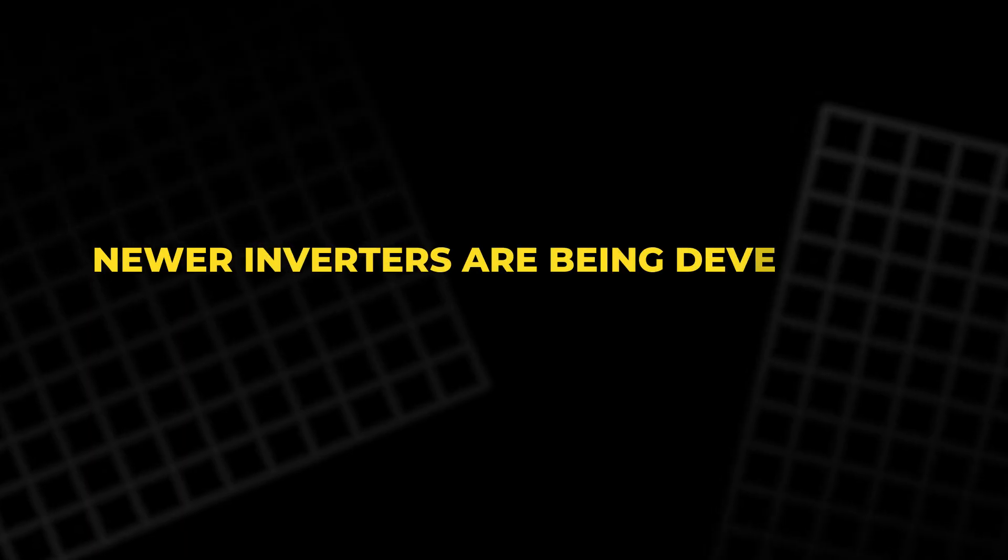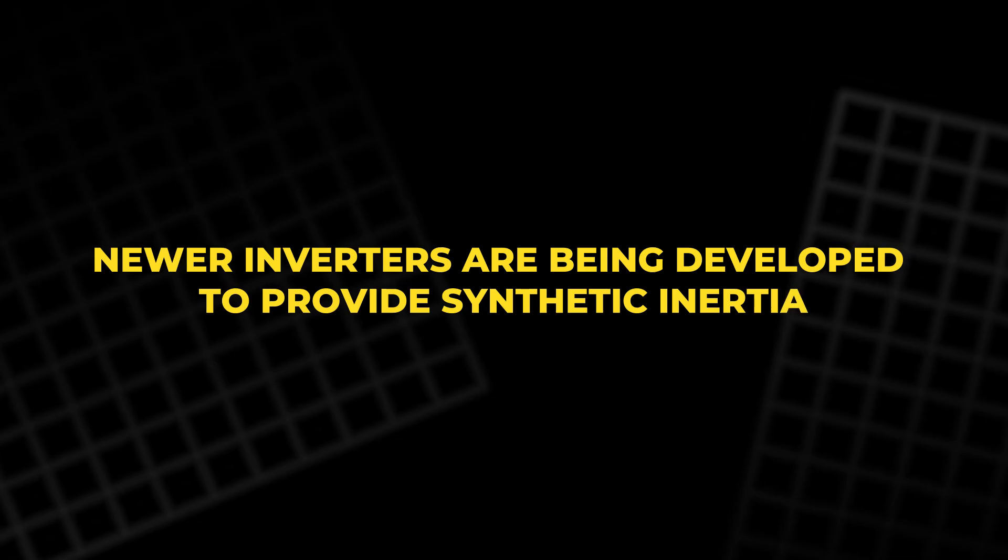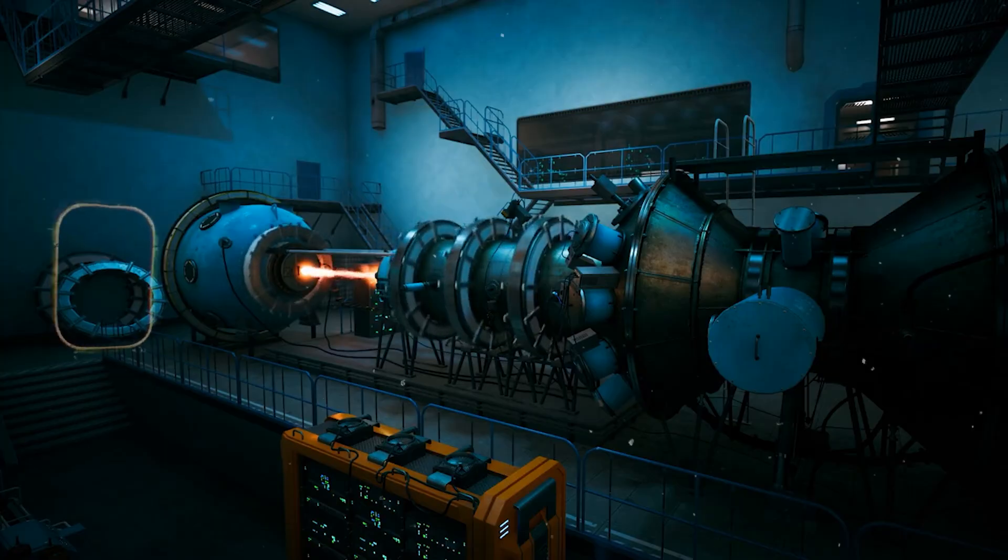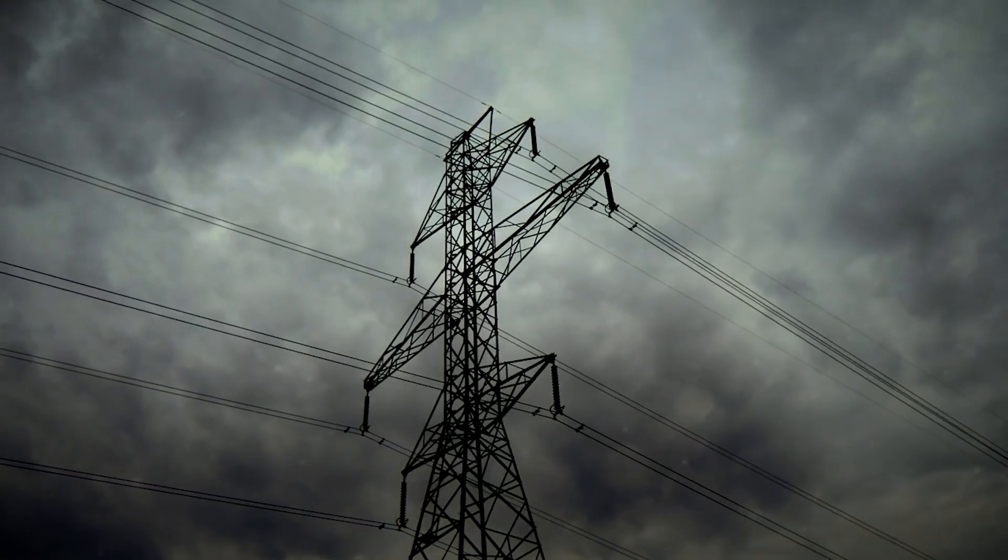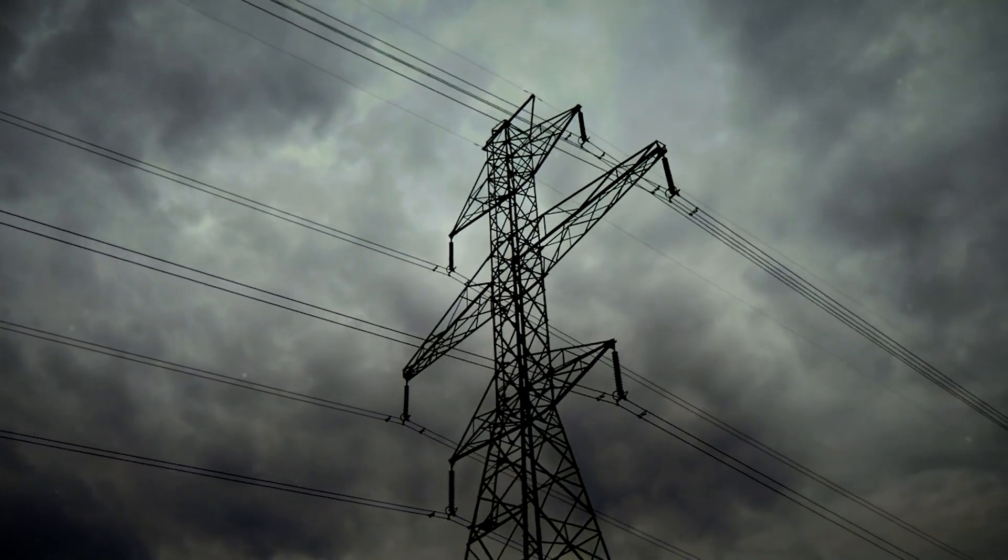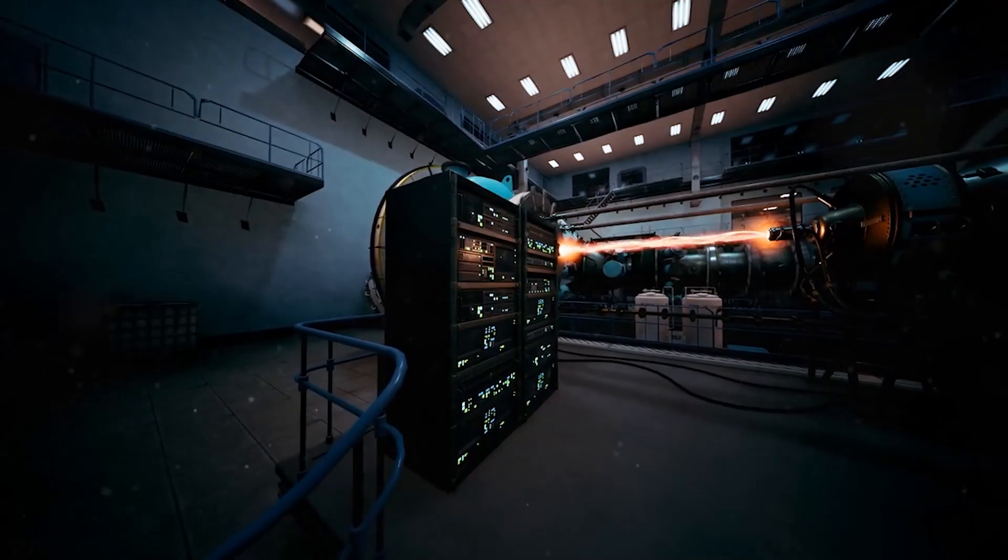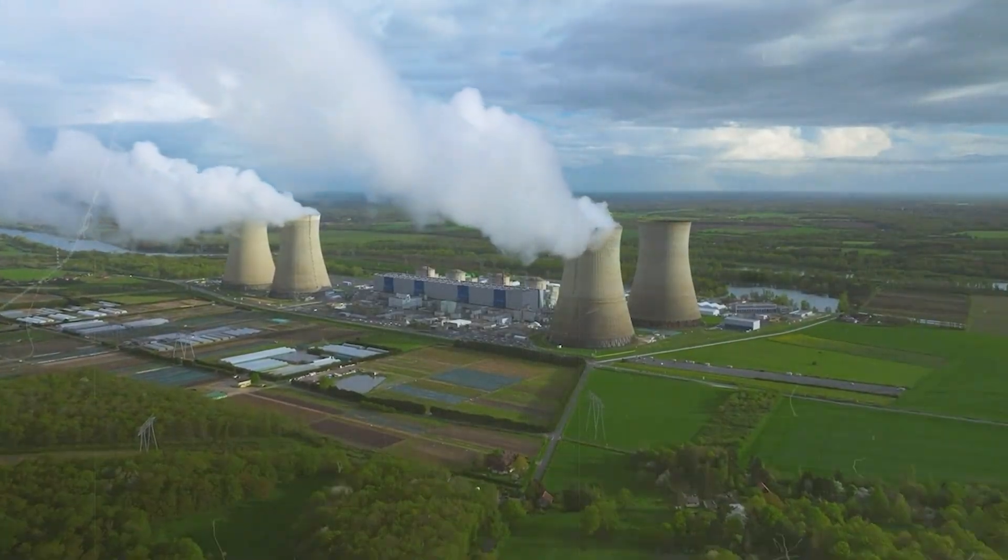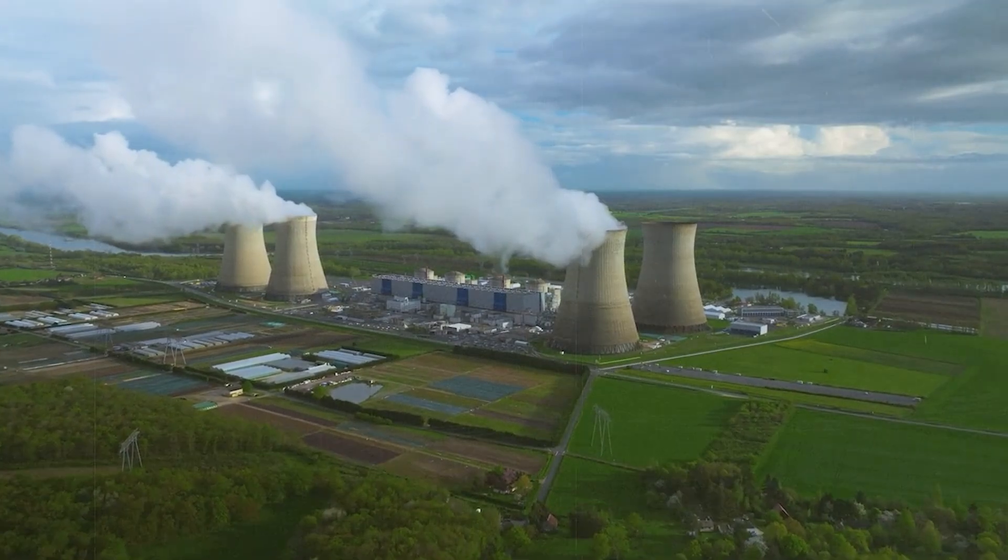To address this, newer inverters are being developed to provide synthetic inertia. This means that the inverter can simulate the behavior of a large spinning generator, helping to stabilize the grid during disturbances. While these inverters can help address some of the challenges of integrating renewable energy, they still cannot fully replace the inertia provided by traditional power plants.